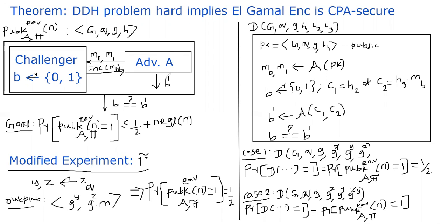The adversary does his work. He knows the encryption algorithm and the public parameters, but not the private key. The adversary makes a guess B prime, which is either 0 or 1. The adversary wins if his guess B prime is the same as B chosen by the challenger. Of course, any adversary can win with probability one-half just by making a blind guess.